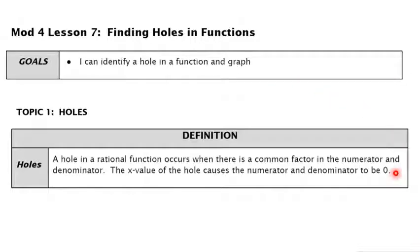A hole in a rational function occurs when a common factor is in the numerator and the denominator. If I get a certain x value, it would make the top and bottom zero and kind of create a hole. We're going to look at how to find where the hole is and graph it.